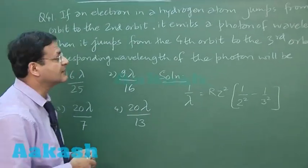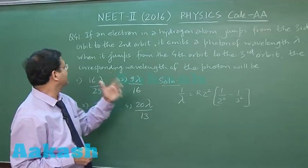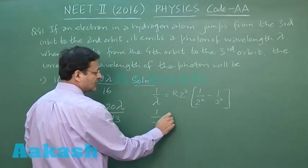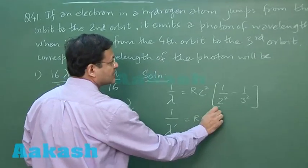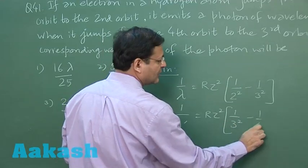Now they're asking when it jumps from the fourth orbit to third orbit, what is the corresponding wavelength? Let's suppose that wavelength is λ'. So it's jumping from 4 to third, so it will be 1/3² minus 1/4². All you have to do is divide these equations.